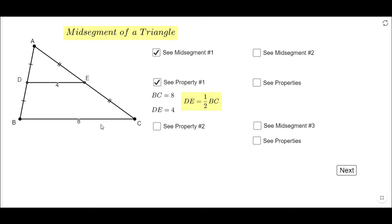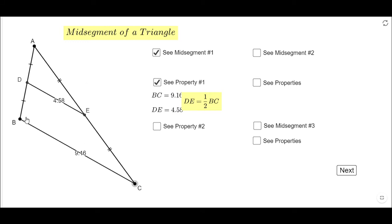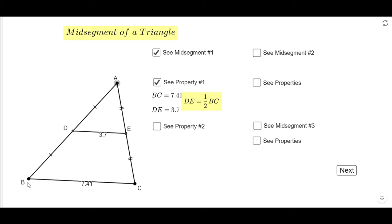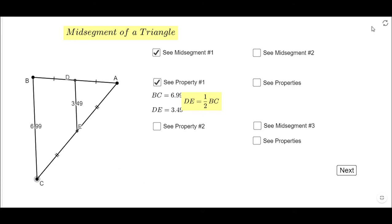And I can play with this triangle and move these vertices, and I'm going to get the same property I mentioned. If I want to go back to the original picture, I just click here on the right side, and I'm back to the original picture.